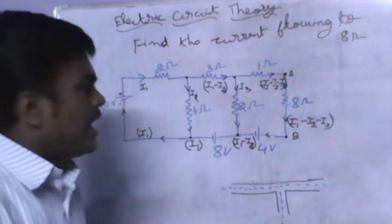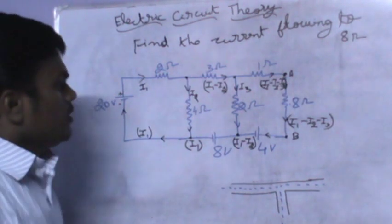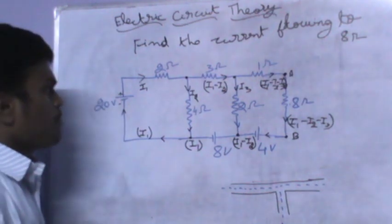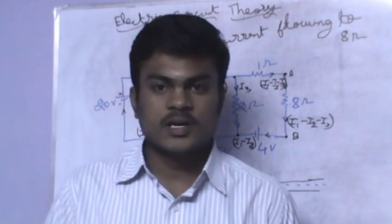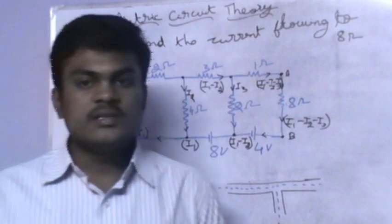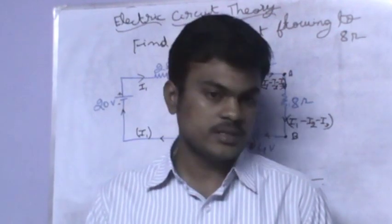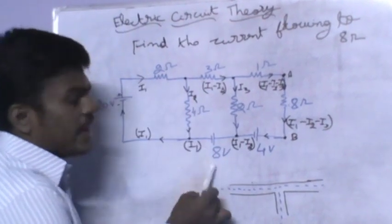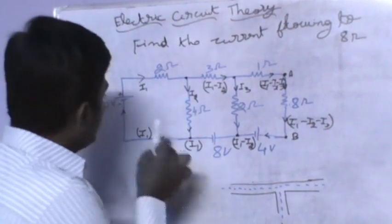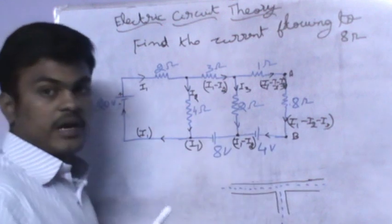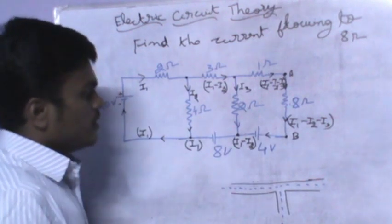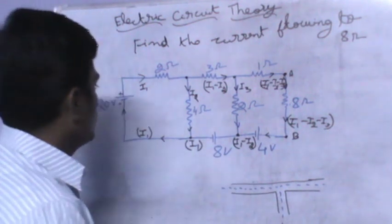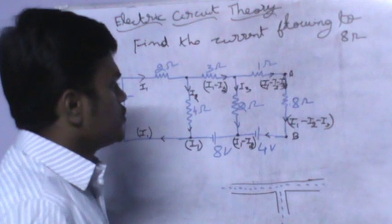This completes step one. Now comes the Superposition Theorem. The Superposition Theorem can be applied to a circuit having two or more sources, whether current or voltage sources. Here I have three voltage sources and several resistors with values.